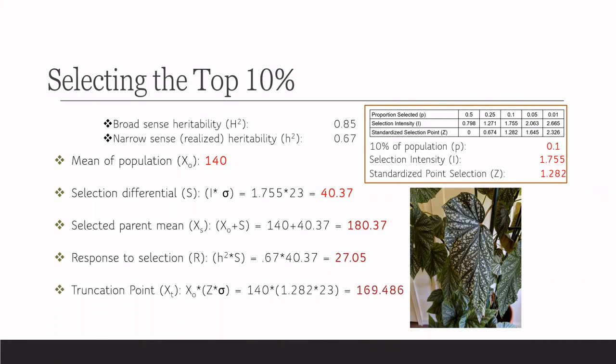Our truncation point is just going to be our mean of original population plus the z-value times the standard deviation, which is going to equal 169.486.